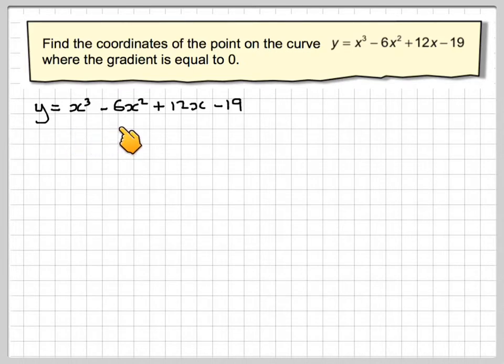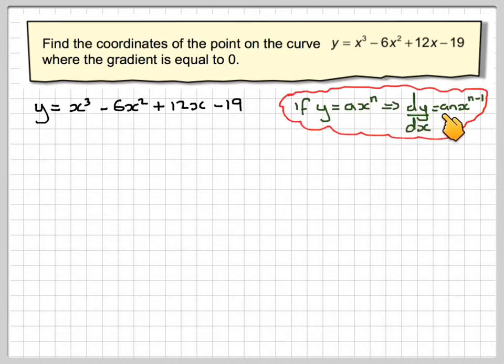So we've got y is equal to x cubed minus 6x squared plus 12x minus 19. If y is equal to ax to the n, then dy by dx will be anx to the n minus 1.